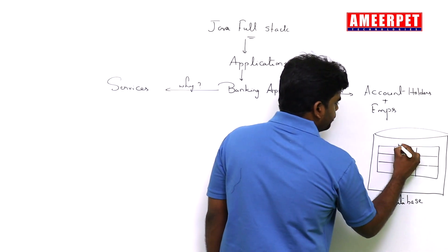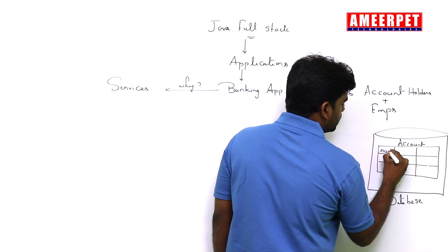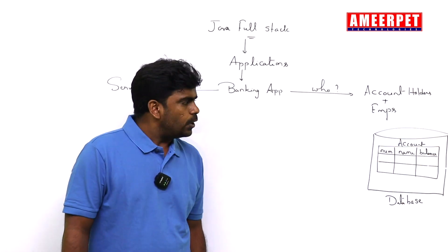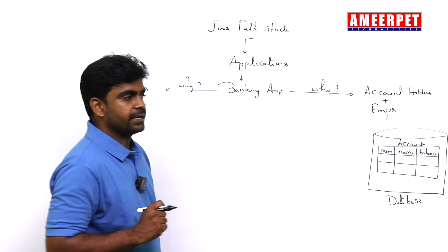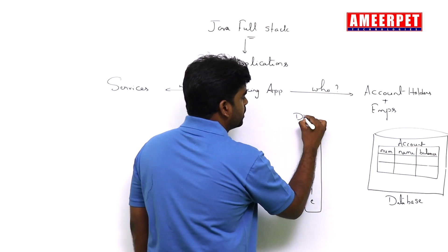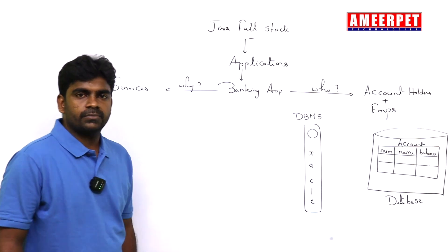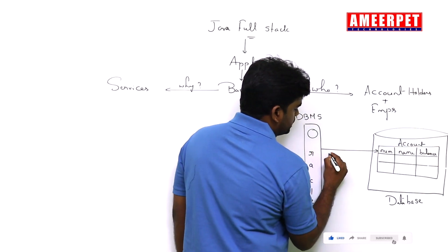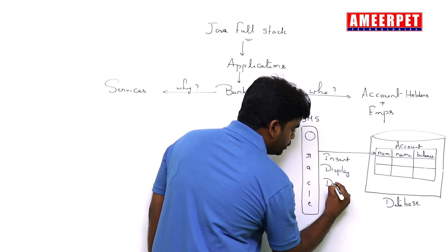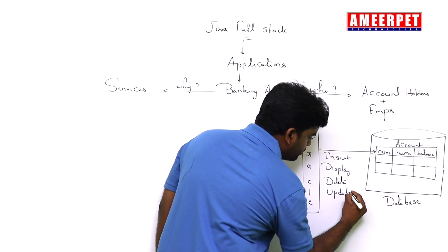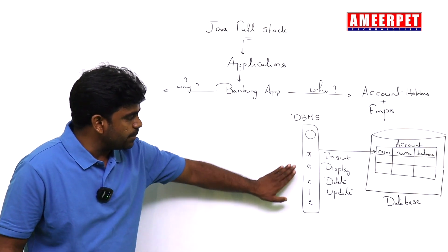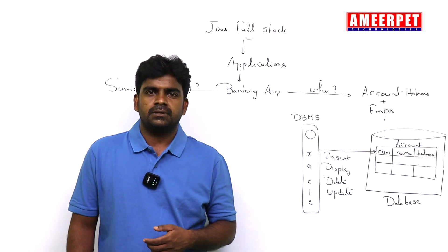Tables store information like account number, account holder name, and balance. To perform all data operations, we use one software called a Database Management System — for example, Oracle. Using this we can perform all operations: insert data, display information, delete information, update information — any database operation you can perform using that Database Management System.